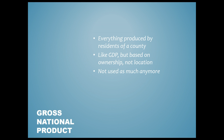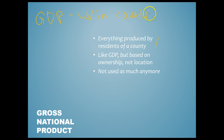Gross National Product, or GNP, is another indicator you may have heard of. It measures everything produced by residents of a country, whereas GDP is based on location — everything produced within a country regardless of who owns it. So a German-owned factory in the US counts toward US GDP but not GNP, while an American-owned factory in Germany counts toward US GNP but not GDP. GNP isn't used as much anymore — the world largely abandoned it before 1991, when the US switched to GDP as its main measure.